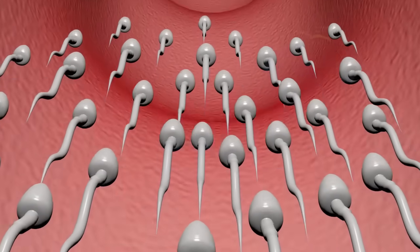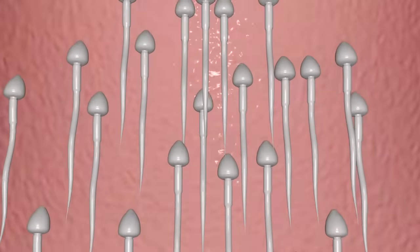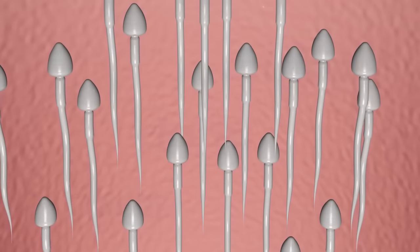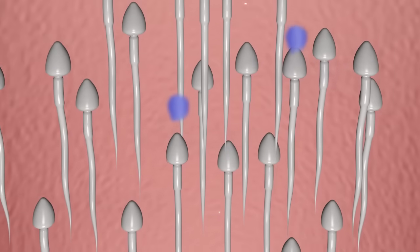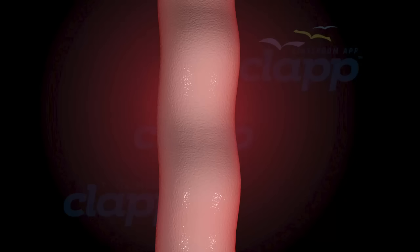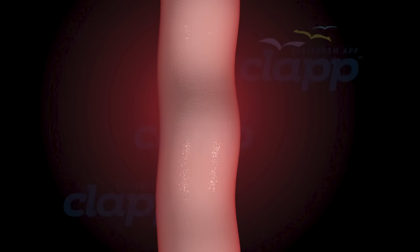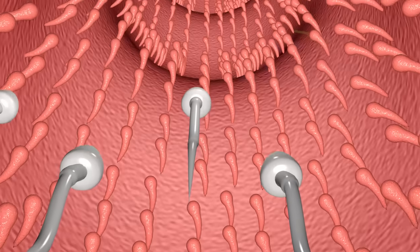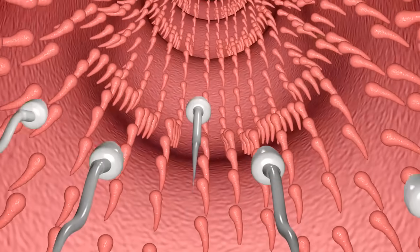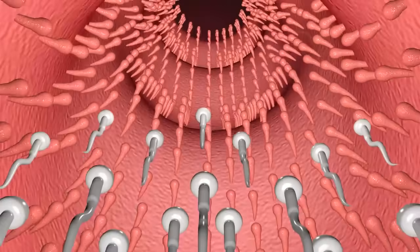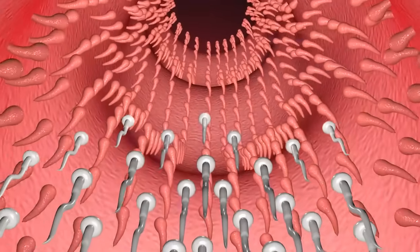The female immune system may recognize sperm as foreign and attack them, and some of the sperm will be destroyed in this attack. A pumping motion within the uterus helps propel sperm towards the egg. Cilia create a sweeping motion to help sperm move inside the uterus towards the egg.